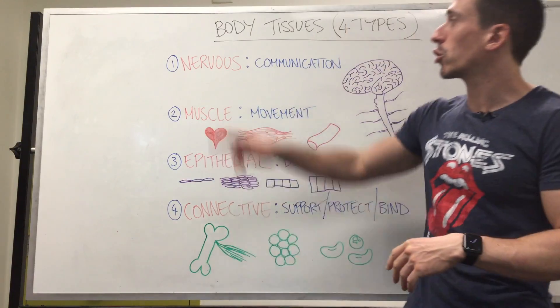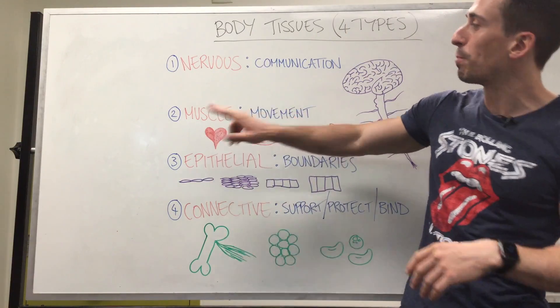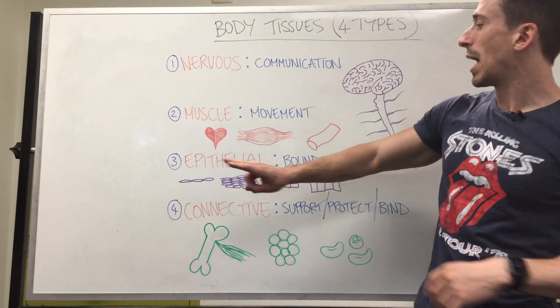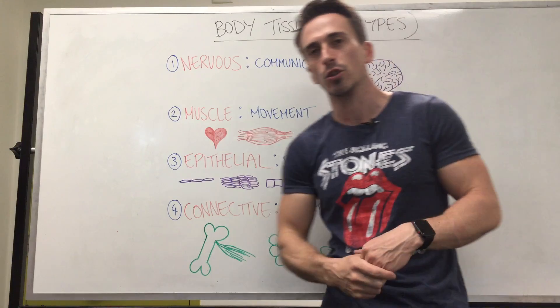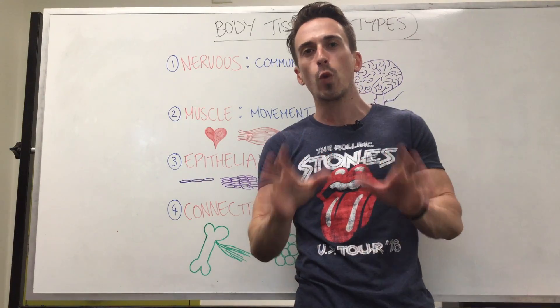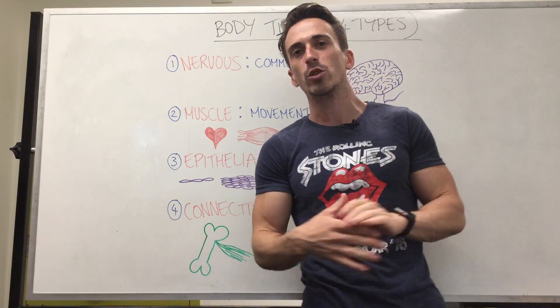These four tissues include nervous tissue, muscle tissue, epithelial tissue, and connective tissue. So let's have a quick run through of each one.